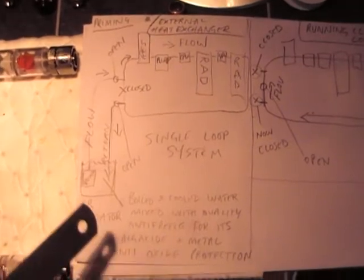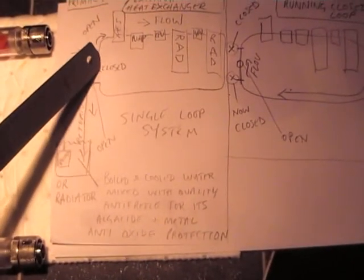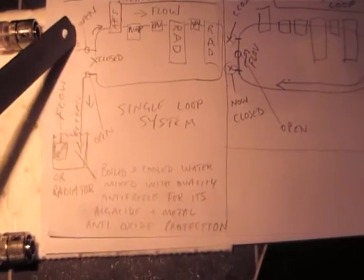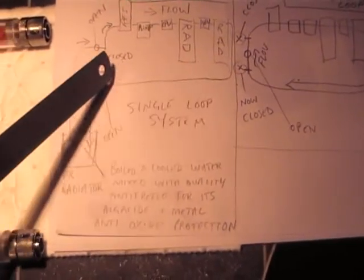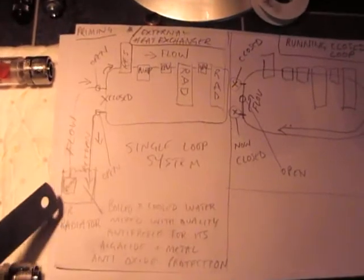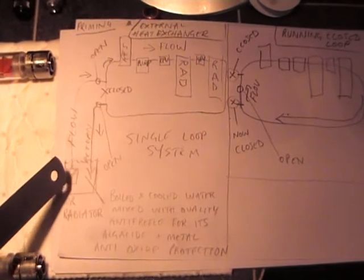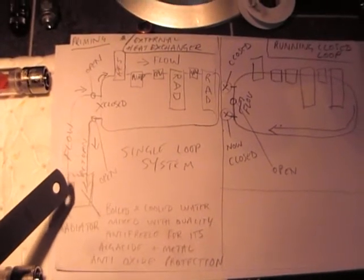So if you want to fill the system then this center one is closed. These two valves are opened. Your flow goes round through the system, back down again. So you could use this if you wanted to use an external radiator, or if you wanted to blow the air out of the system.